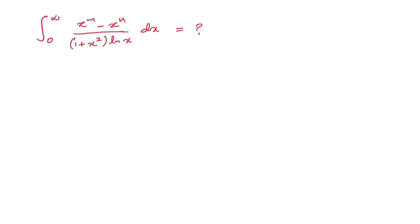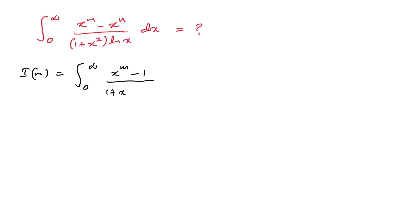Hello everyone, welcome to the Mathematics MA channel. In this video we are going to solve this interesting integral by using Feynman's technique. First, I am going to define an integral: I(m) is equal to the integral from 0 to infinity of x to the m minus 1 over (1 plus x squared) times the natural log of x, dx.